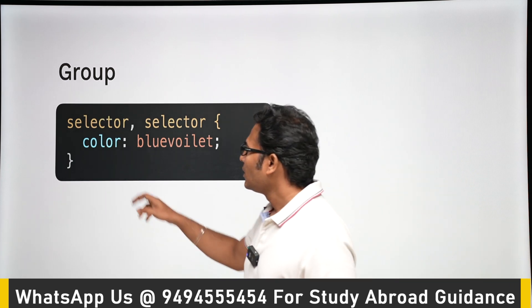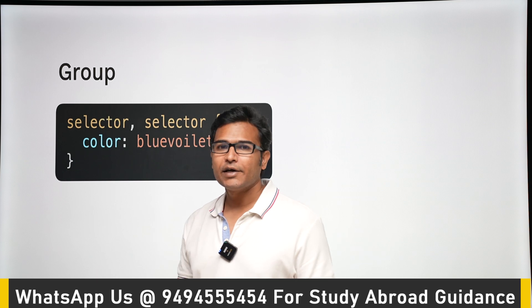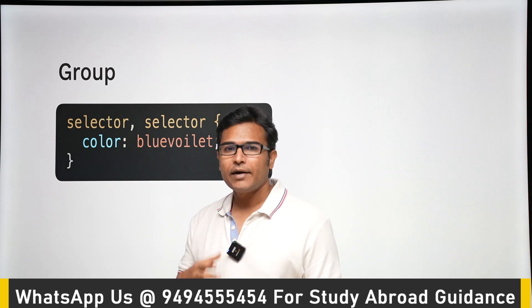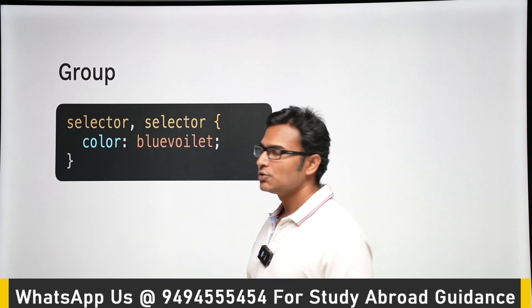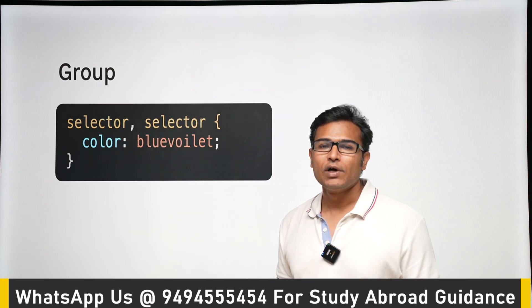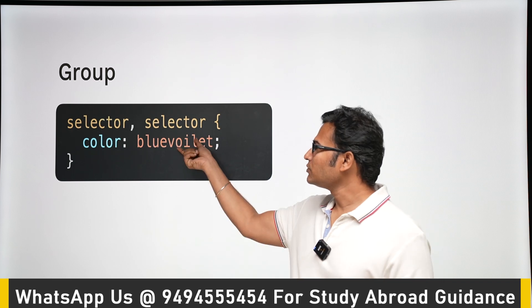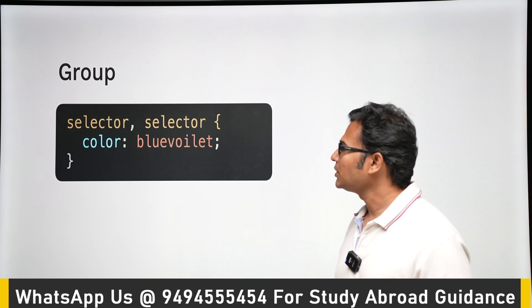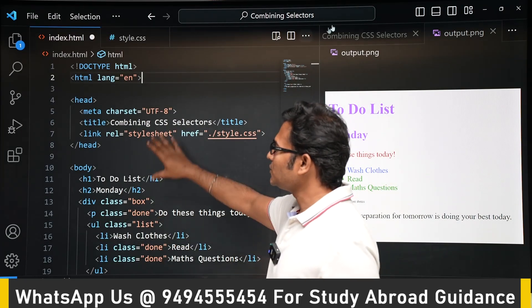To write a group selector, write a selector like h1, then put a comma and a space, and then write one more selector h2. That way, the rules will be applied to both h1 and h2. Let's see an example.